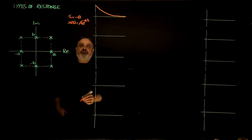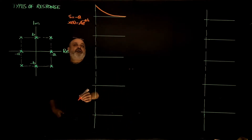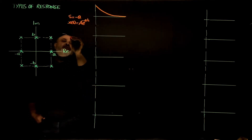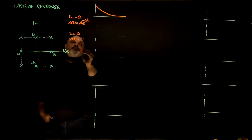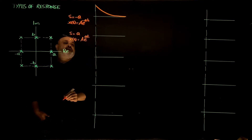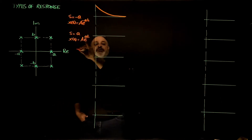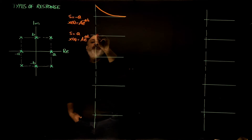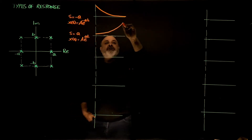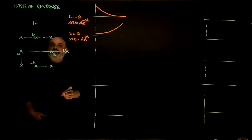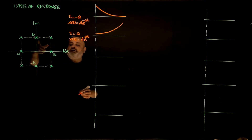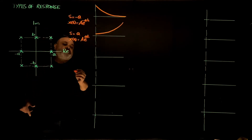The other possibility is the root at positive a. Then x(t) is going to be some amplitude e to the power a·t, and that's a positive exponential function that goes to infinity with time exponentially. So that response is unstable. Now let's move to the complex or the imaginary axis.